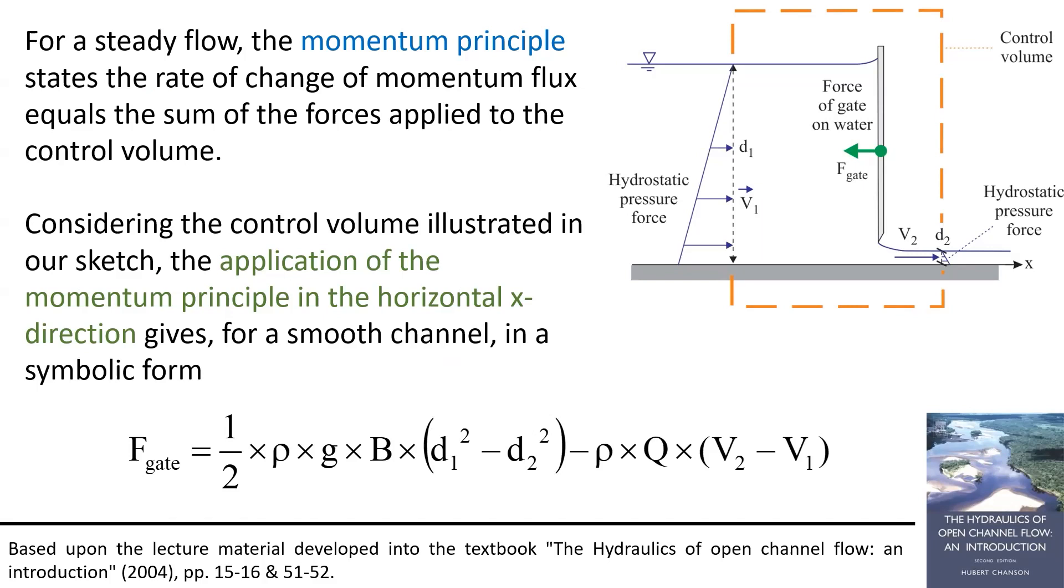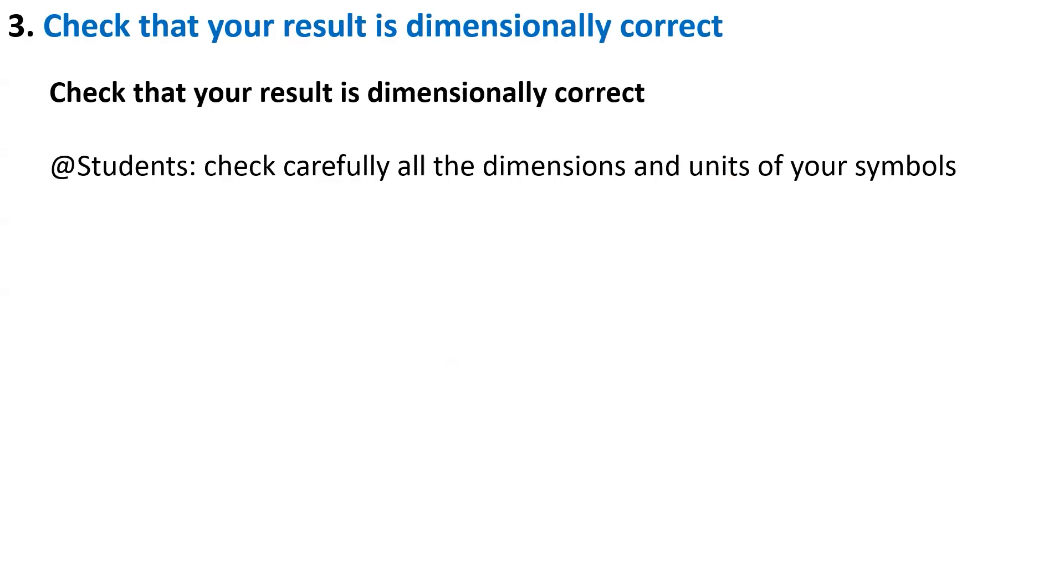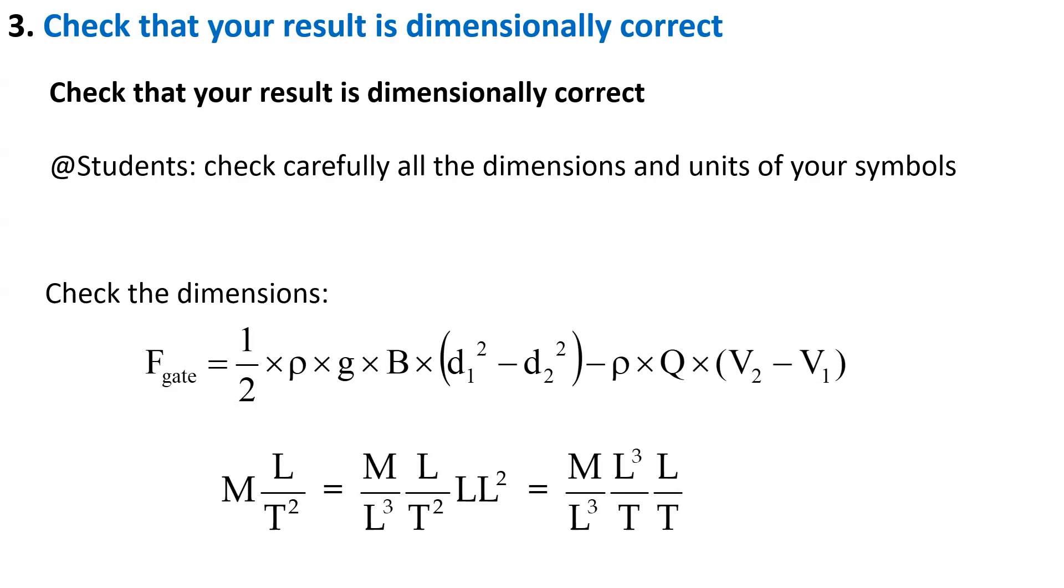We now need to check that our result is dimensionally correct. We need to check carefully for all dimensional units. So here we have an expression with three terms. Let us check the three basic dimensions: mass, length, and time for all three terms. And as we can see, all the units are the same for all three terms. That is good.